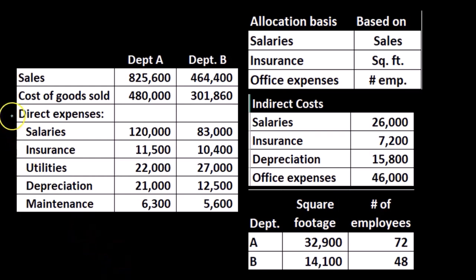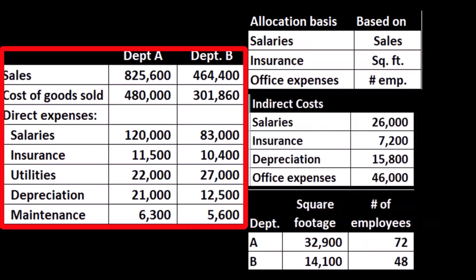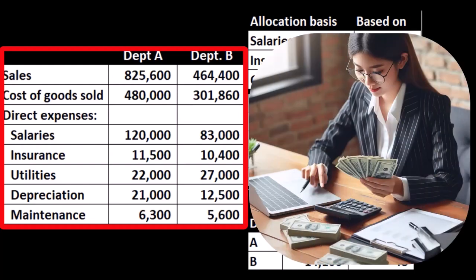Here's our data: we've got the sales, cost of goods sold, and direct expenses, which are going to be the salaries, insurance, utilities, direct depreciation, and maintenance. We're not focusing here on the direct expenses — remember, the direct expenses are those items that we can apply directly to each department, so there's not much of an issue.